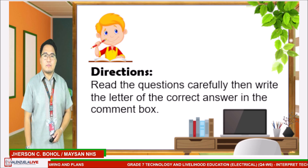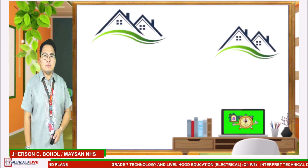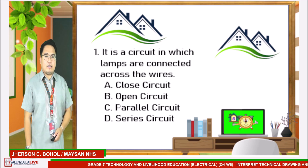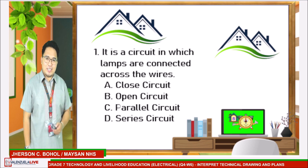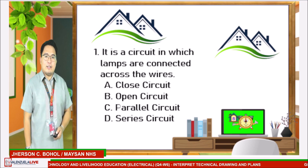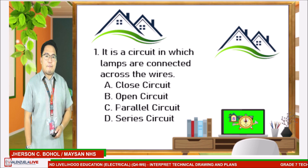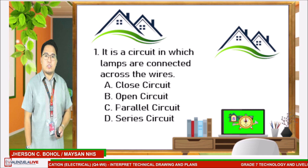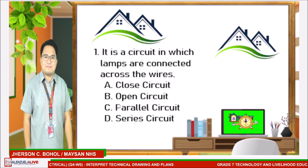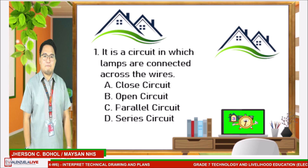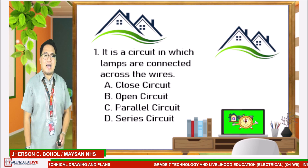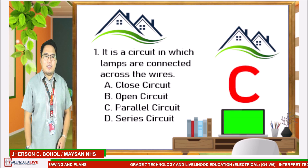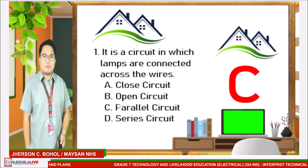Number one: it is a circuit in which lamps are connected across the wires. Choices are: letter A, closed circuit; letter B, open circuit; letter C, parallel circuit; and letter D, series circuit. If you answered letter C, you are correct. Number two: it is a sketch showing the components of a circuit using electrical standard symbols. Choices are: letter A, electrical plan; letter B, schematic diagram; letter C, pictorial diagram; and letter D, series wiring diagram. If you answered letter B, you are correct.